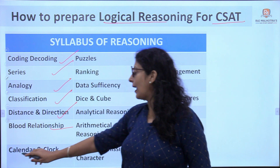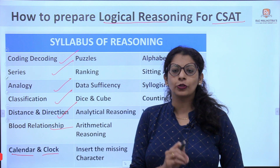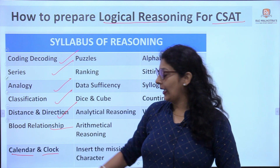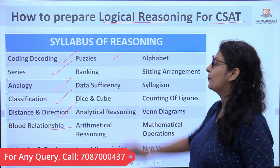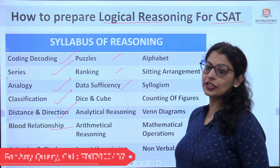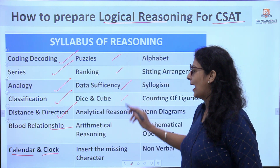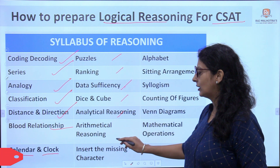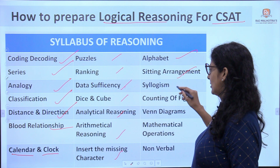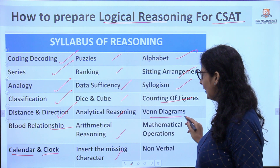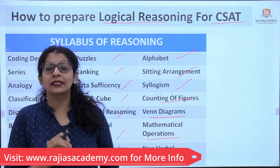Blood Relationship — with three types: jumbled, mixed, and coded. Calendar and Clock is a very important topic; every year two to three questions come from it. Other topics include Time Sequence, Puzzles, Ranking, Data Sufficiency, Dice and Cube, Analytical Reasoning, Arithmetical Reasoning, Insert the Missing Character, Alphabet, Sitting Arrangement, Syllogism, Counting of Figures, Venn Diagrams, Mathematical Operations, and Non-Verbal Reasoning.